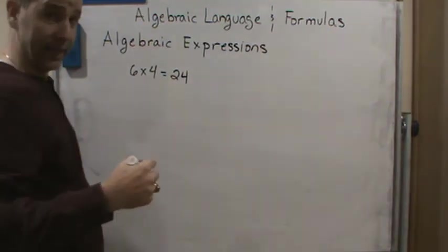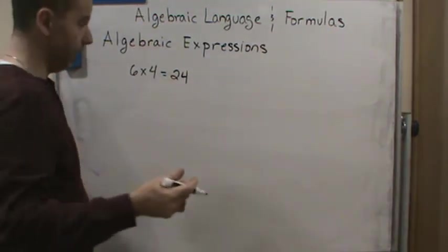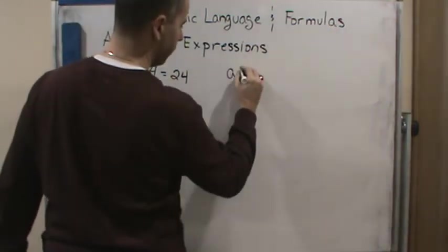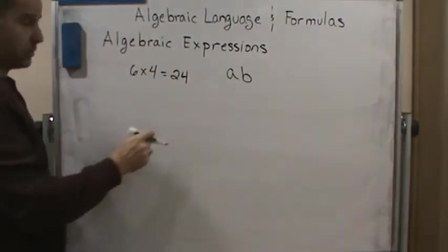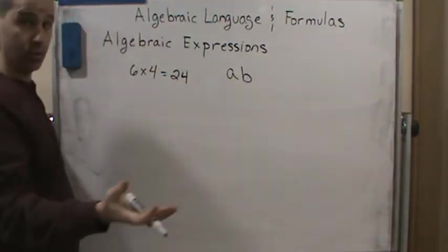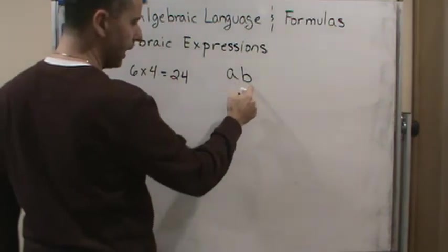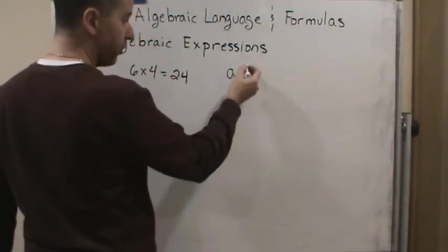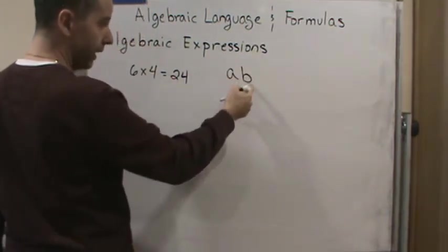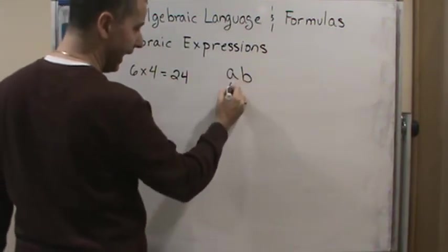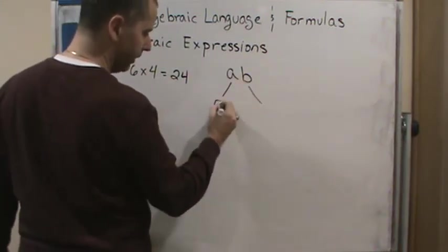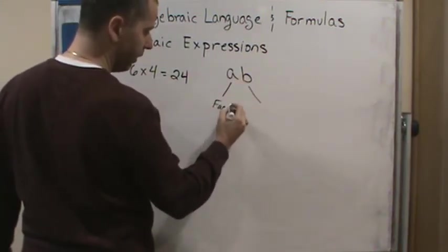So what if I have two, what if I have this, right? This means multiplication, right? I just don't know what the two numbers are. So, but I'm multiplying two numbers, right? So this is called the product, right, this multiplication, but a and b are each a factor.